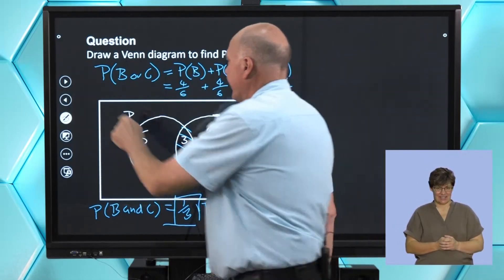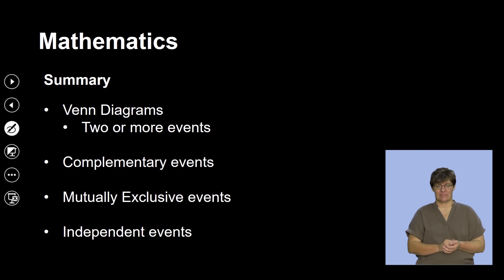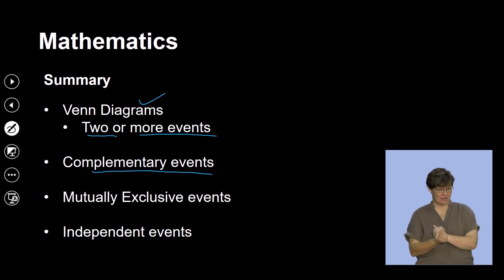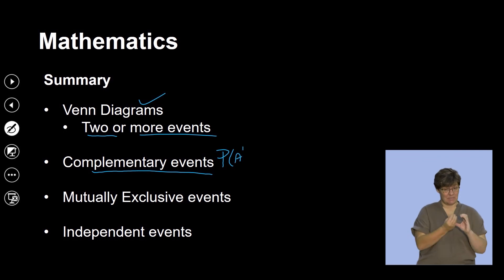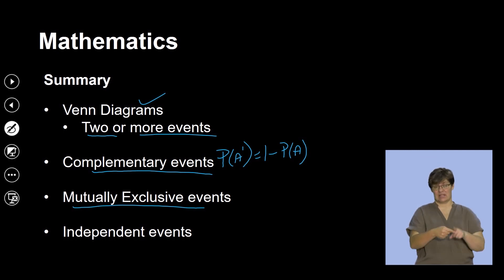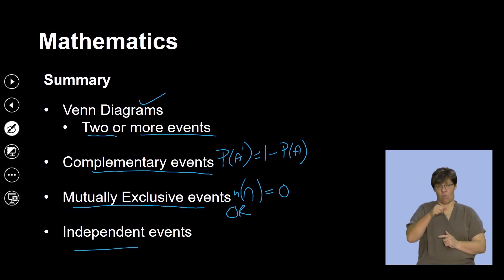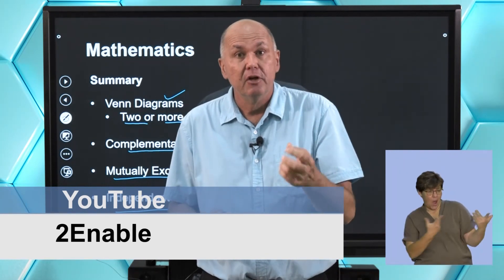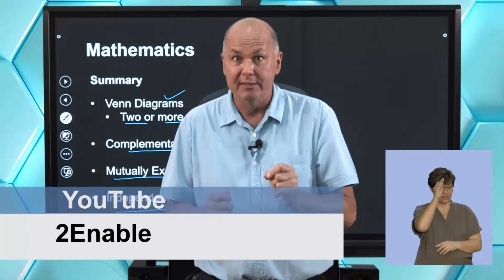In today's lesson we've looked at using Venn diagrams to represent two or more events, complementary events where the complement of A equals 1 − P(A), and mutually exclusive events where the intersection is empty and we use the addition rule. For independent events we use the multiplication rule. I hope you now have more tools in your toolbox to predict the chance of future events.